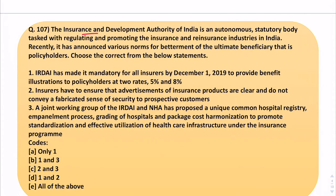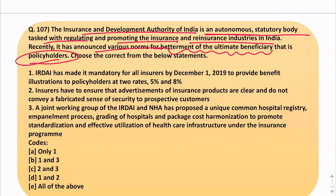The next question says the Insurance and Development Authority of India is an autonomous statutory body tasked with regulating and promoting the insurance and reinsurance industries in India. It has announced various norms for the betterment of policyholders. Three statements have been given and you need to identify which are correct. The first says it made it mandatory by December 1, 2019 for all insurers to provide benefit illustrations at two rates: 5% and 8%.